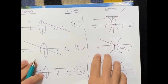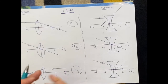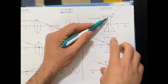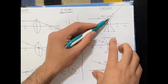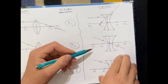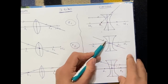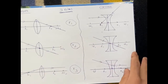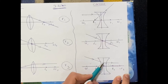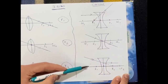Now let's look at the three rules for concave lens. The first rule: a ray of light parallel to the principal axis, after refraction, appears to come from the focus. The second rule: a ray of light going towards the optical center of the concave lens passes straight through without being deviated. The third rule: a ray of light going towards the focus, after refraction, comes out parallel to the principal axis.